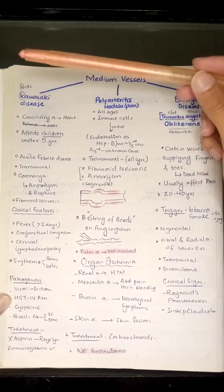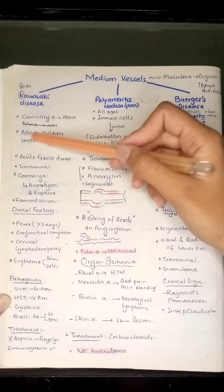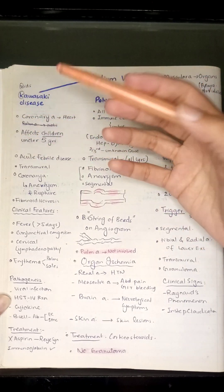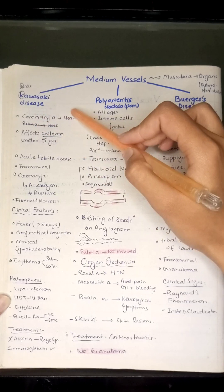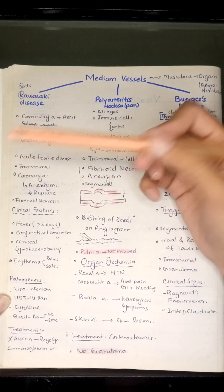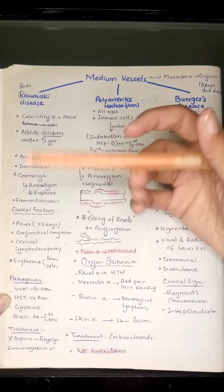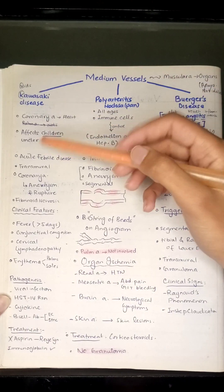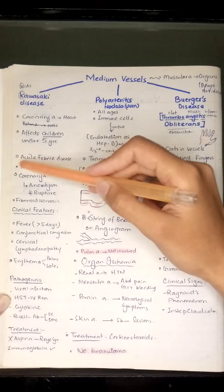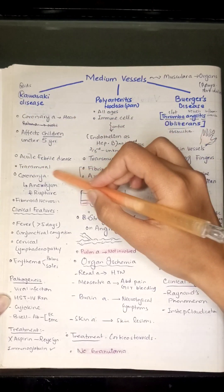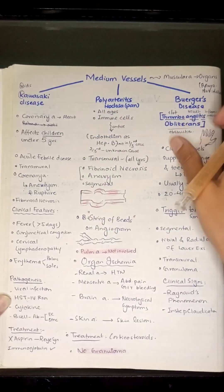Kawasaki disease is a disease of children under five years of age. It most often affects the coronary arteries, producing symptoms in the heart. It is an acute febrile disease, meaning the person will have fever when affected. Kawasaki disease is transmural, meaning it affects all layers of the vessels — the tunica intima, media, and adventitia.